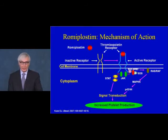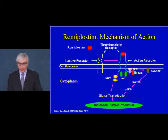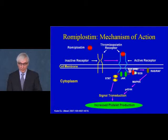The two major TPO mimetics today are romiplostim and eltrombopag. Their mechanism of action is to act on the thrombopoietin receptor to stimulate signaling through the megakaryocyte cell membrane via the STAT-JAK and MAP kinase pathways, leading to increased platelet production.